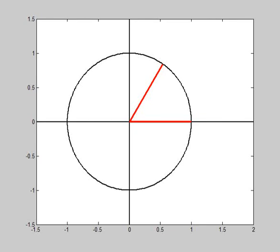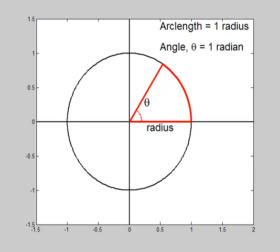This video illustrates the definition of a radian. First begin with a unit circle. Now consider an arc length equivalent to one radius. The measure of the angle subtending an arc length of one radius is one radian.